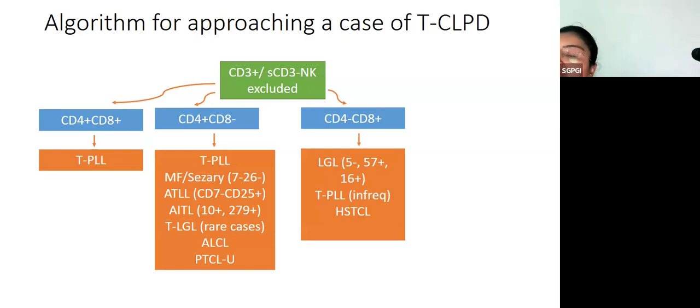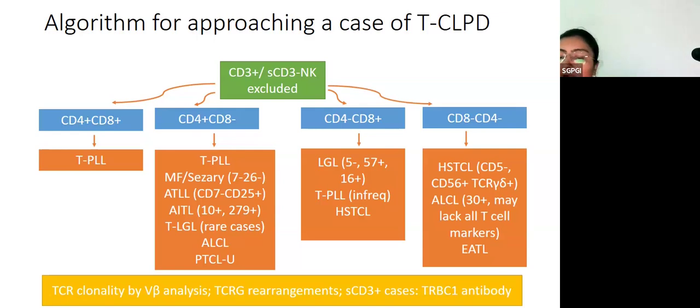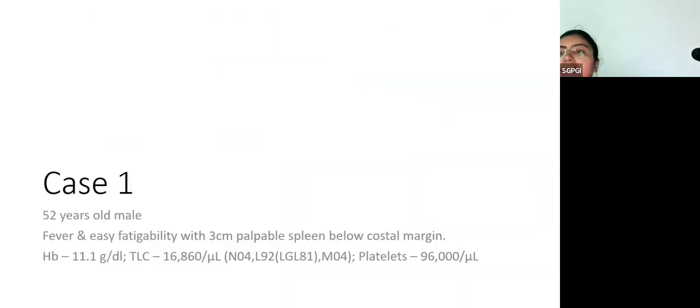CD4 negative, CD8 positive lesions: very frequently what we deal with is large granular lymphocyte proliferation or LGL leukemia. This pattern is also seen with hepatosplenic T-cell lymphoma. For CD8 negative, CD4 negative, our differentials are hepatosplenic T-cell lymphoma, ALCL, and enteropathy associated T-cell lymphoma. We have already discussed clonality assessment. With that, let us see a few cases.